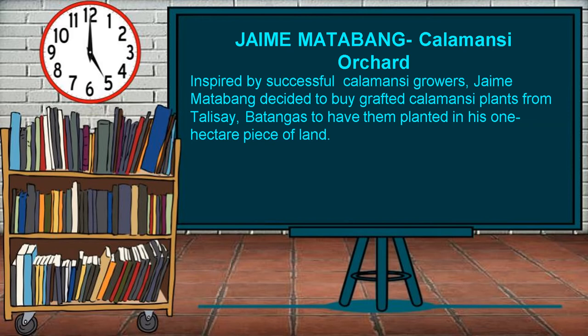Pest and diseases in calamansi crops are easy to spot, like the zigzag marks, cuts, and ragged edges, which indicate that the citrus is infested with citrus bark borers. His farm yields are sold to the market and to other manufacturers who process beverages, syrups, concentrates, juices, preserves, jams, candies, and others.